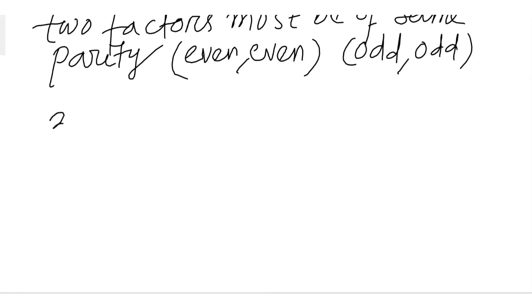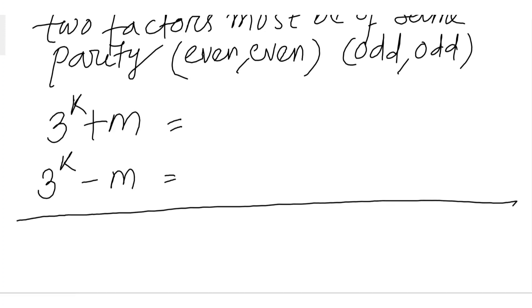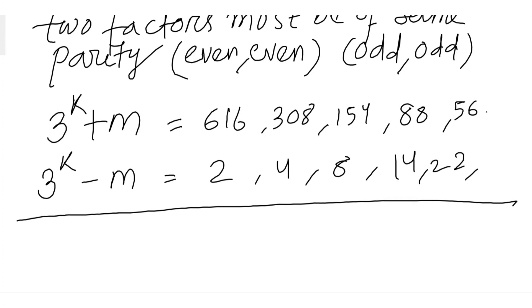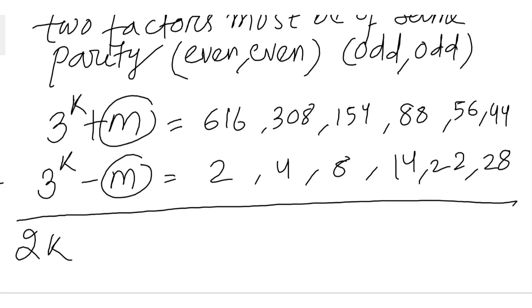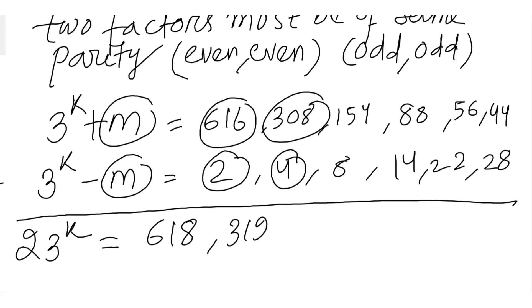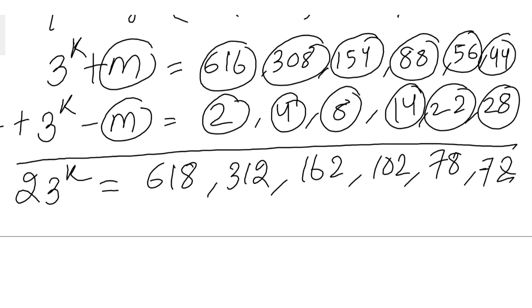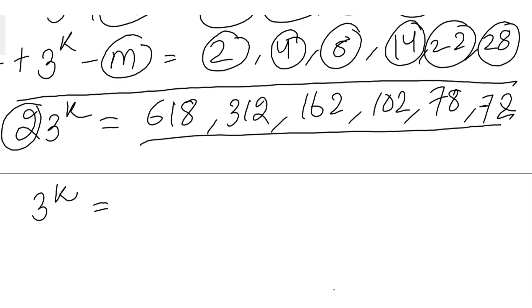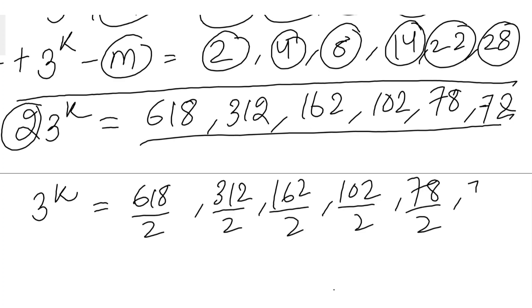Let's list the factor pairs of 1232 such that both factors have the same parity and are not equal. The valid pairs are: (616, 2), (308, 4), (44, 28). Adding the two equations cancels m, giving 2 times 3^k equals: 616 + 2 = 618, or 308 + 4 = 312, or 44 + 28 = 72. Dividing by 2, we get 3^k equals 309, 156, or 36.